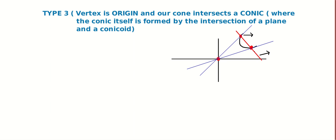Now we'll come to that method. Now look at this — we can see a three-dimensional version. So instead of the conic, what we see here is a conicoid. Some people say 'conisoid', some say 'conicoid' — basically it stands for sphere, ellipsoid, paraboloid, and similar 3D surfaces.